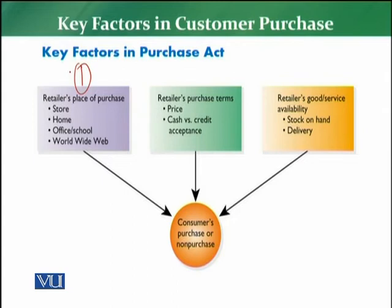For example, agar aap ka store jo ke over the web hai — which means online store hai — lekin customer does not have access to the internet, so in any case there would be a gap. As a retailer, ye baat samajhna zaruri hai ke customer woh exchange kaise karay ga. Woh purchase act tabhi karay ga when he will interact and exchange with the retailer. Toh yahan pe dono ka connect hoga. Is liye jo first important factor hai, that is the location of the store — retailers place of purchase. It can be physical or virtual; physical mein it can be store based, home based, school, or office.